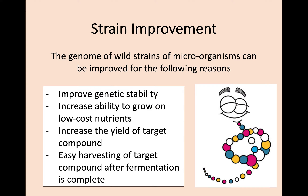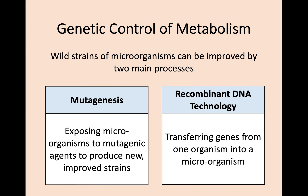Going back to the previous topic, we talked about growing microorganisms and why we like to use them in industry. The genome of wild strains of microorganisms can be improved for several reasons: to improve their genetic stability, to improve their ability to grow on low-cost nutrients, to increase the yield of target compounds, and to make it easier to harvest that target compound after your process in the fermenter.